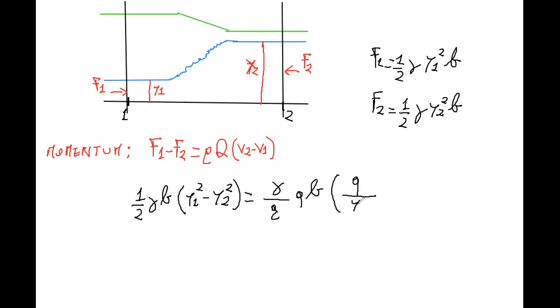Lowercase q over y2 minus lowercase q over y1, where I just remind you that lowercase q is uppercase Q over B.